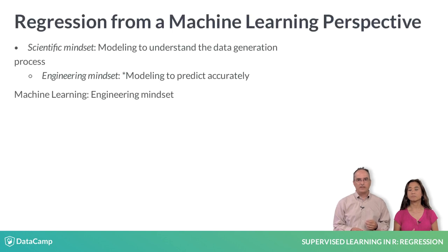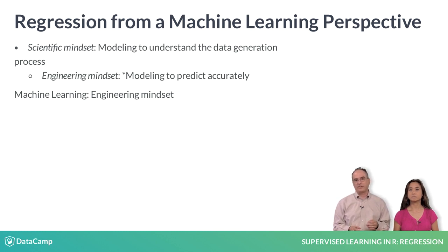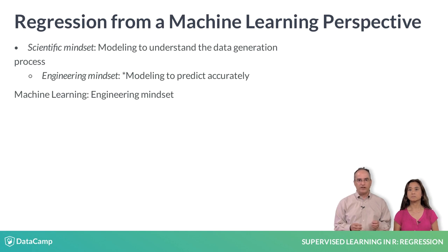Let's look at the reasons for modeling. Modeling from a scientific mindset focuses on understanding the process that produced the data — how each variable affects the outcome. Modeling from an engineering or machine learning mindset focuses on predicting future events accurately, and less on the relationship between variables and outcomes. In this course, we will emphasize predicting accurately. You will learn several algorithms for fitting regression models, and by the end of the course you should have a better idea about the advantages and disadvantages of each algorithm.